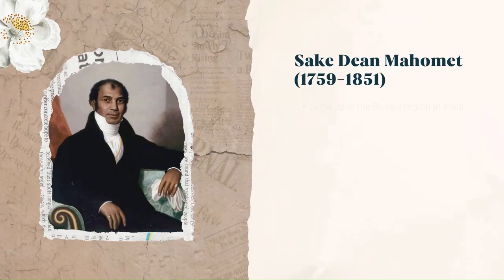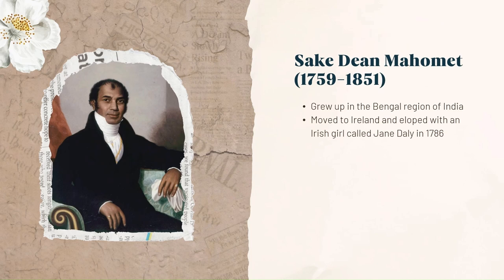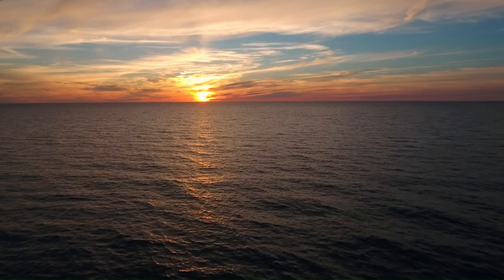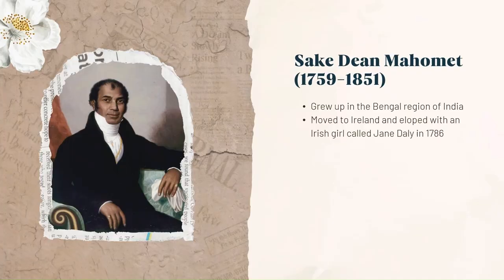Sake Dean Muhammad (1759–1851). Muhammad grew up in the Bengal region of India. He served in the Bengal army and came to Britain in 1782. He then moved to Ireland and eloped with an Irish girl called Jane Daly in 1786, returning to England at the turn of the century. In 1810 he opened the Hindustani Coffee House in George Street, London — the first curry house to open in Britain. Muhammad and his wife also introduced shampooing, the Indian art of head massage, to Britain.